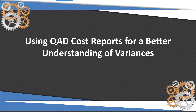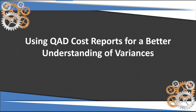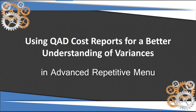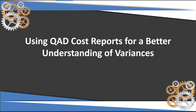This short video is an adjunct to the June 19 32 Software webinar on variance reporting in QAD. In this video, we will review the 16.3.4 work order cost report in detail to ascertain how to identify all of the variance elements we discussed in the webinar. We will also review a number of valuable reports in the work order report menu, the advanced repetitive report menu, and the shop floor control report menu, which will help you in the analysis of your variances in your manufacturing operations.